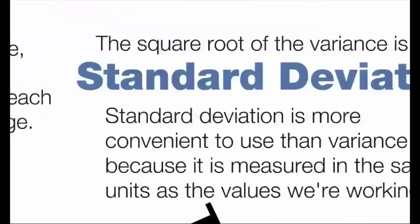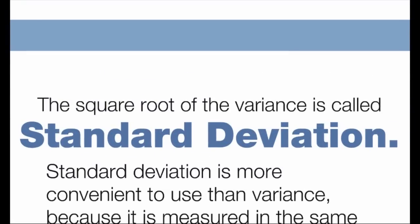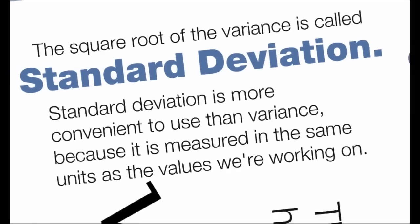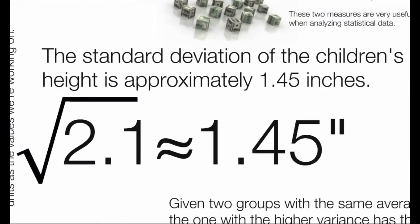The square root of the variance is called standard deviation. Standard deviation is more convenient to use than variance because it's measured in the same units as the values we're working on. The standard deviation of the children's height is approximately 1.45 inches.